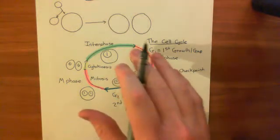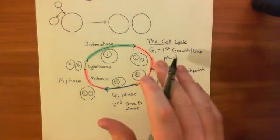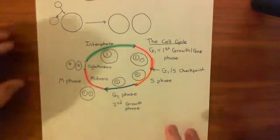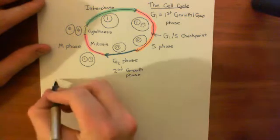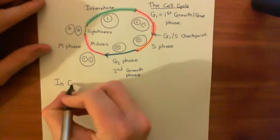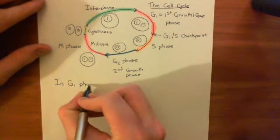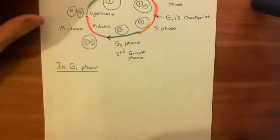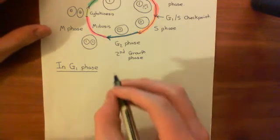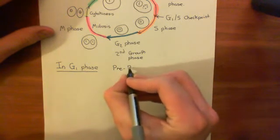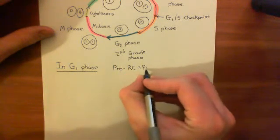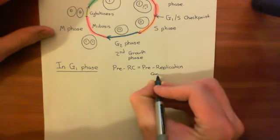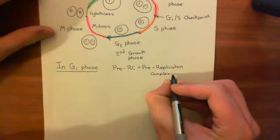Now what we want to discuss is a bit more about what's actually happening to the DNA in G1 phase - what do I mean by getting ready to replicate the DNA? In G1 phase, you are indeed getting ready to replicate the DNA. What I mean by that is that you are setting up what are known as pre-replication complexes, or pre-RCs. You are producing these pre-replication complexes in the G1 phase of the cell cycle.